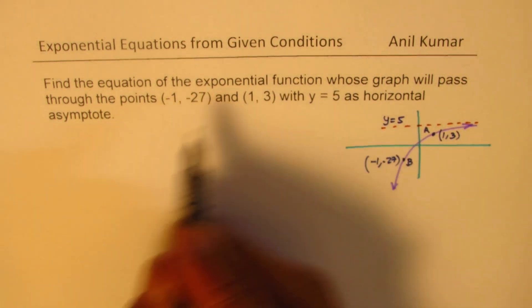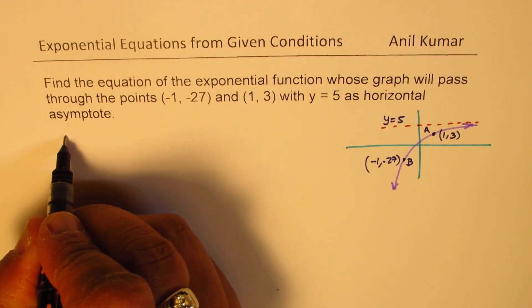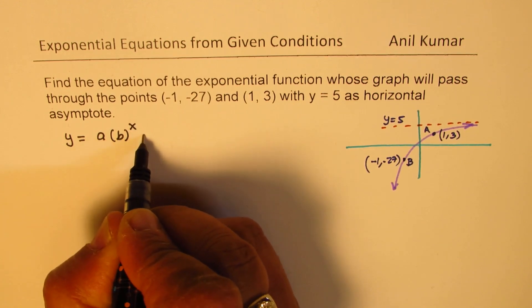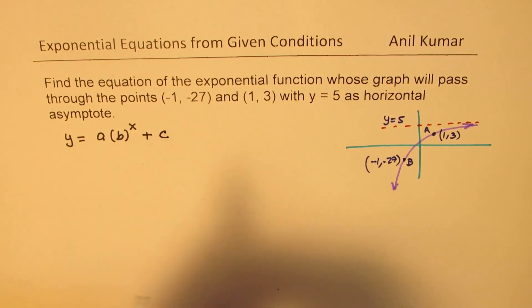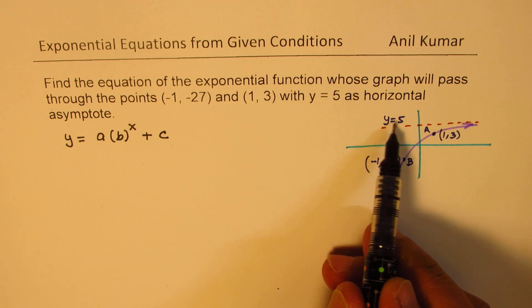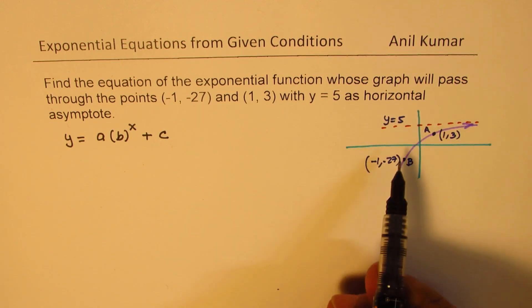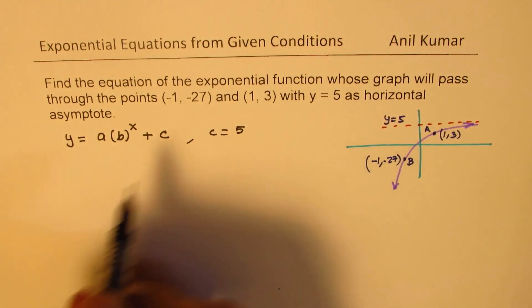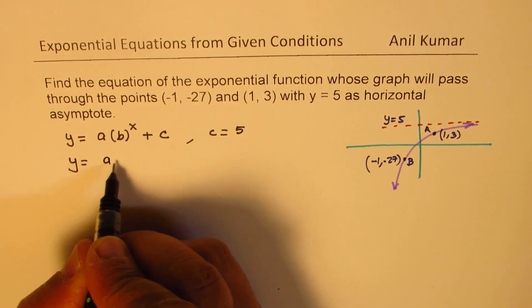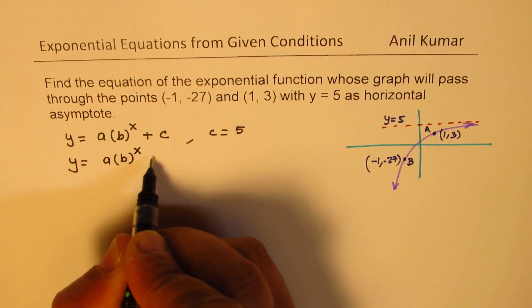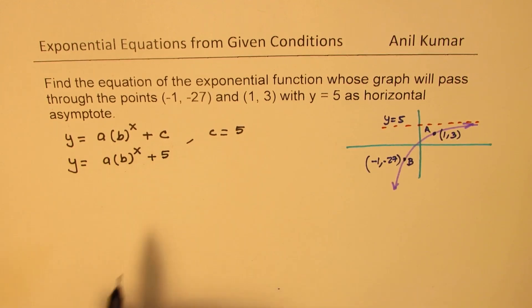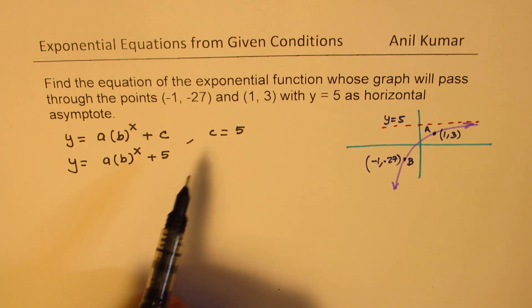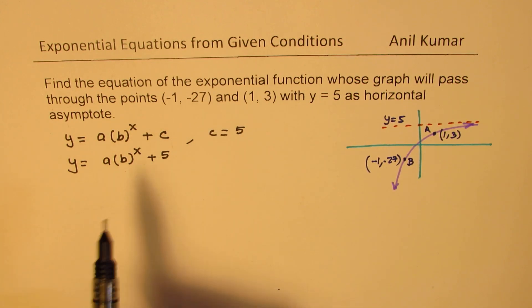Generally, an exponential function can be written as y = a(b)^x + c. Now, since y = 5 is a horizontal asymptote, we know c = 5. So we can write this as y = a(b)^x + 5. Now we have two variables, a and b, which are unknown, and we have two points, so we can definitely find them.